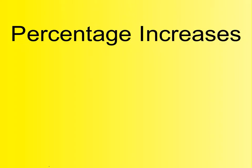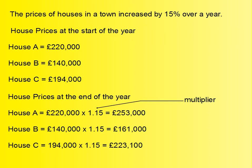In this lesson, we shall learn about how we increase an amount by a given percentage. The prices of houses in the town increased by 15% over the course of a year. Here we have the prices of House A, B and C at the start of the year and the same prices at the end of the year. We can see that they've all increased by 15%. House A had a value of £220,000 to begin with, House B had a value of £140,000, and House C had a value of £194,000, and we are told that all of them increased by 15%.